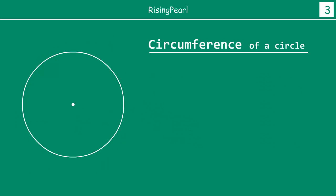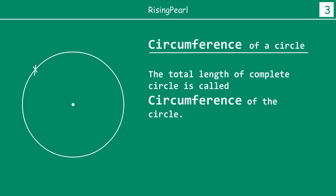Now, what do we mean by circumference of a circle? Circumference means — imagine that you take a thread, you start at any point, and then you take your thread and try to trace it exactly along the circle, throughout, till you get back to the same point. Then if you want to find out the length, you straighten the thread and find out the length. That is called circumference — the total length of the circle.